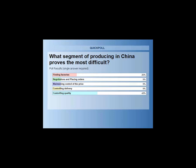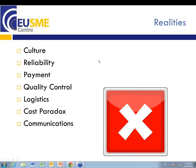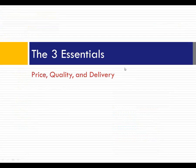I would expect that controlling quality is one of the biggest issues people have when sourcing from China — that's an expected result. As the poll shows, quality is one of the three essentials, and the three essentials are price, quality, and delivery. We call them essentials because if one of the three is missing or does not perform, then the whole sourcing program fails.